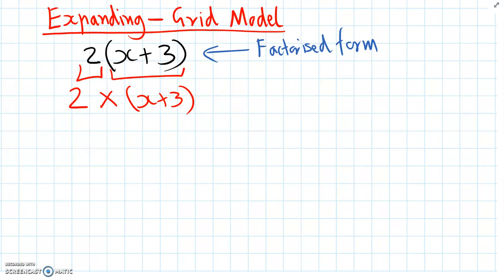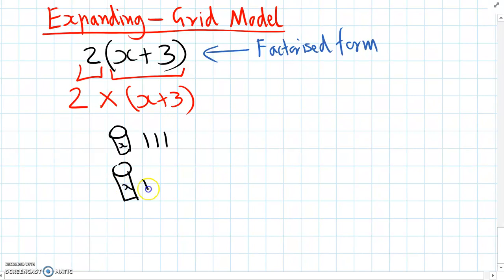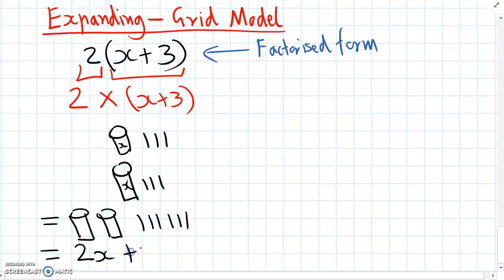With the cups and the straws, we drew this one by showing one group of x plus three, one x plus three. But because we have it multiplied by two, we need to draw another group of x plus three. Then we group the cups together, so we have two cups and six straws. The way we write that with a number sentence is 2x plus 6. That's the expanded form.